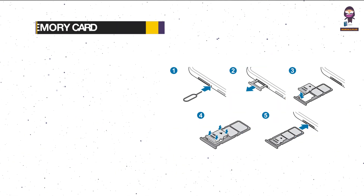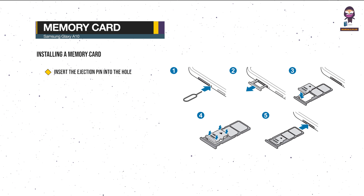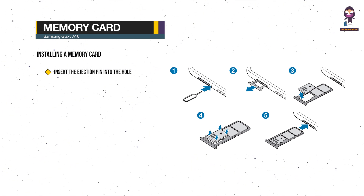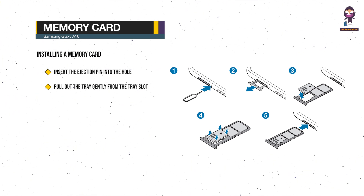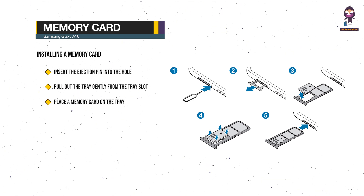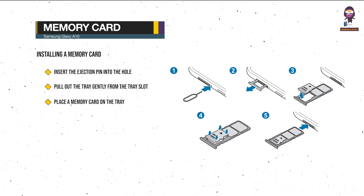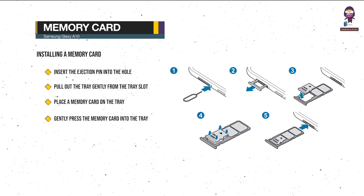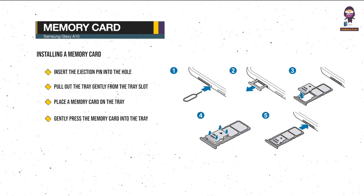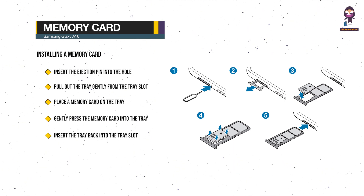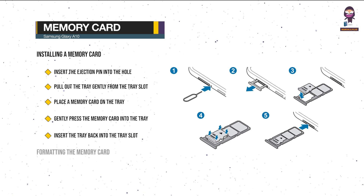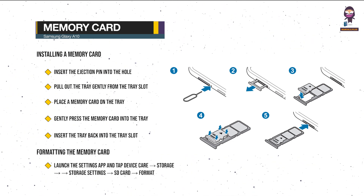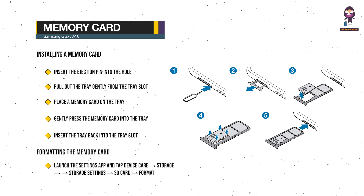Memory card — installing a memory card: insert the ejection pin into the hole next to the tray to loosen the tray. Pull out the tray gently from the tray slot. Place a memory card on the tray with the gold-colored contacts facing downwards. Gently press the memory card into the tray to secure it. Insert the tray back into the tray slot. To format the memory card, launch the Settings app and tap Device Care, Storage, Storage Settings, SD card, then Format.